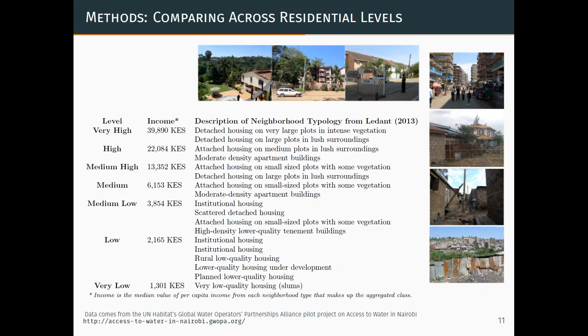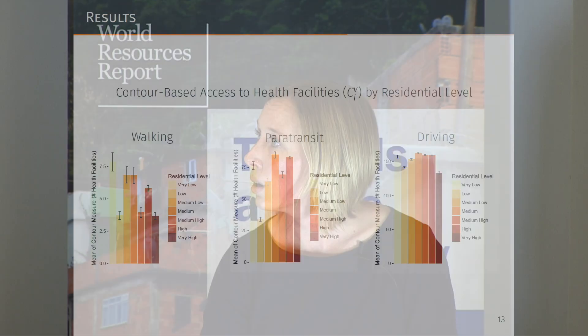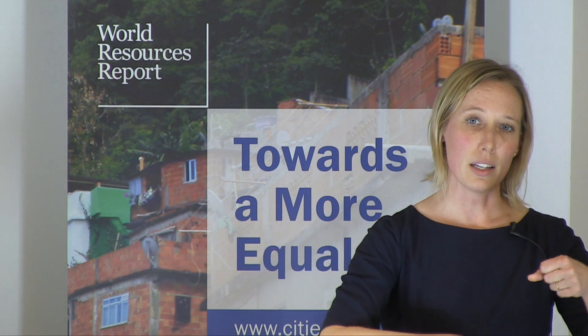We take their classifications of different income groups and use seven categories from very high to very low. The highest type are the very large houses in gated communities. All the way through, the medium type is a lot of the downtown apartment buildings, and the very low type are the slums. We then see the very high types — a lot of the gated communities — being developed on the western part of the city. What we do is take each residential plot, the grid cell that it falls in, and assign it that access measure.